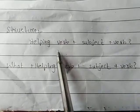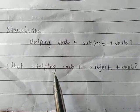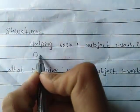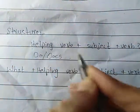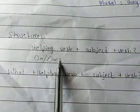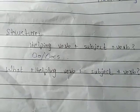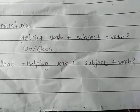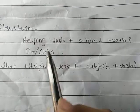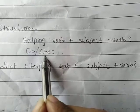So what is the helping verb of present indefinite? We have two helping verbs in present indefinite: 'do' and 'does.' If the subject is third person singular — he, she, it, or any name — we use 'does.'